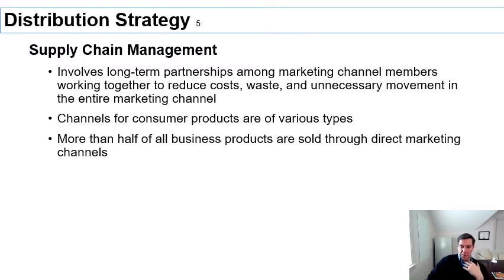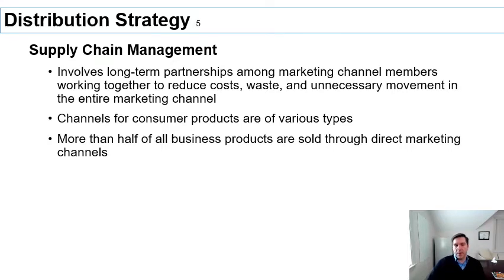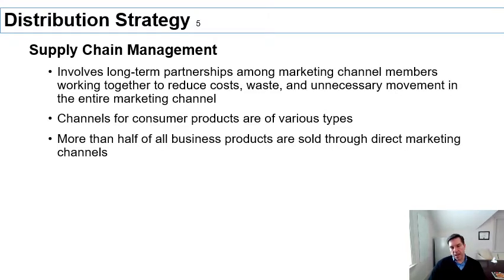Channels of distribution can be very elaborate or very simple. Generally speaking, when you're trying to reach the average consumer or household — because order sizes tend to be small — you'll need a much more complex channel involving more partners. On the other hand, if you're selling to large organizations, the channels tend to be a lot simpler, and about 50% of all business-to-business transactions happen directly with the manufacturer without an intermediary.